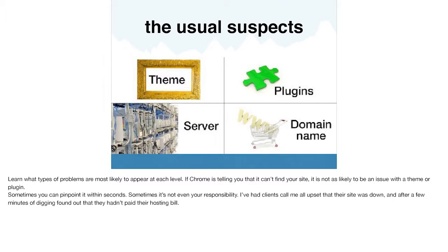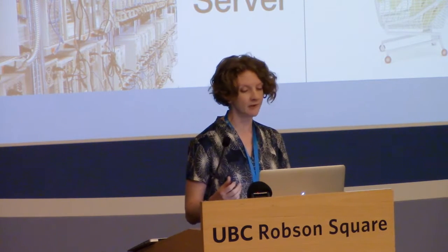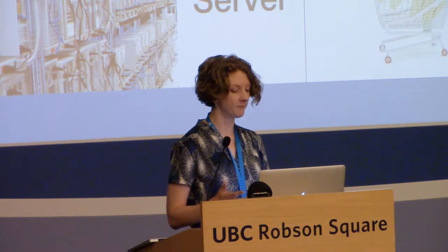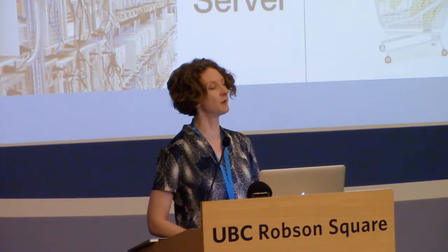If all we know right now is there's a problem, we're going to look at the usual suspects — where are we most likely to find our problems? It could be at the theme level, it could be a plugin, it could be your server, or it could be the domain name. You need to learn what types of problems are most likely to appear at each level. If Chrome is saying it can't find your site, it's probably a domain issue — not as likely to be a theme or plugin. Sometimes you can pinpoint it within seconds; sometimes it's not even your responsibility.